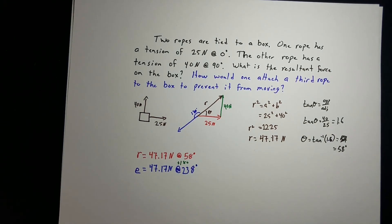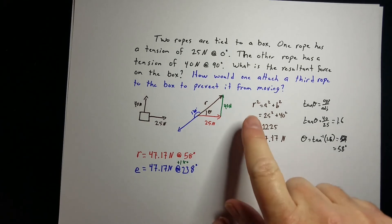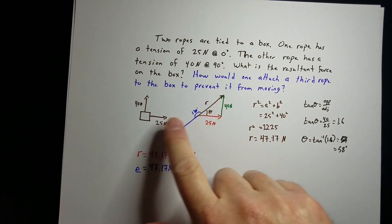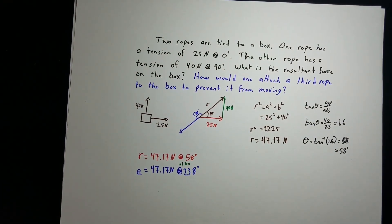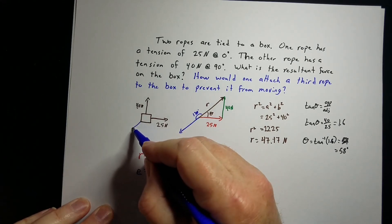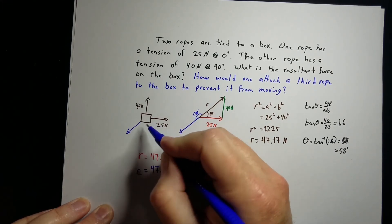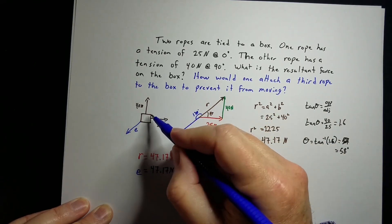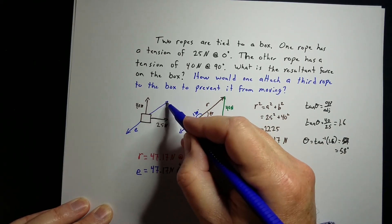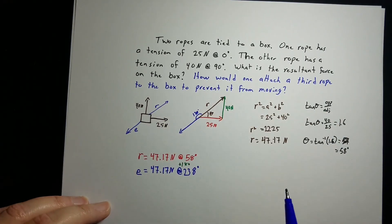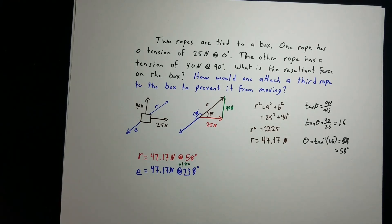All you have to do is, after you find the resultant, keep the same magnitude and add 180 degrees to the angle, and that would be the equilibriant. That would prevent this box from moving because we'll have a force going back this direction that will cancel out that resultant going in this direction. That would prevent that box from moving if it was already stationary.